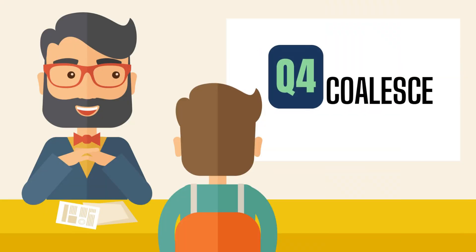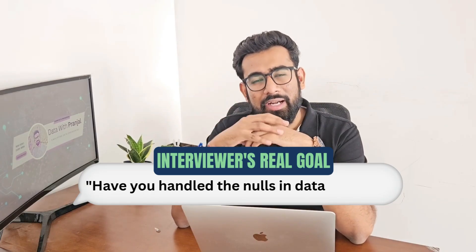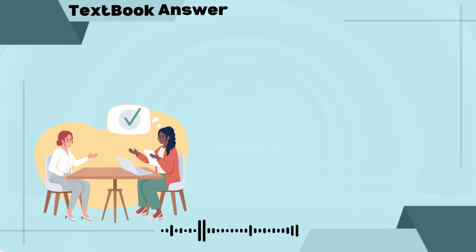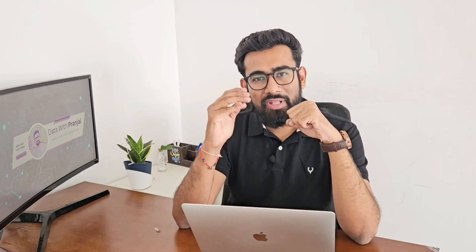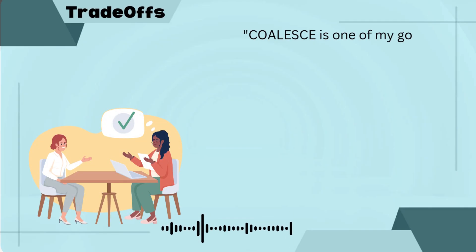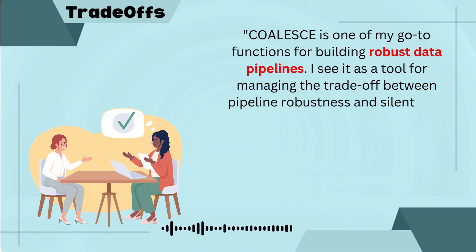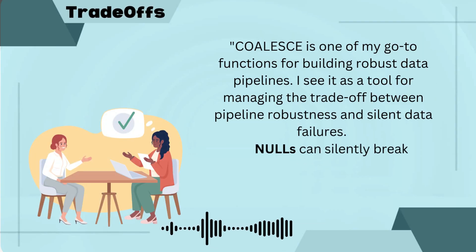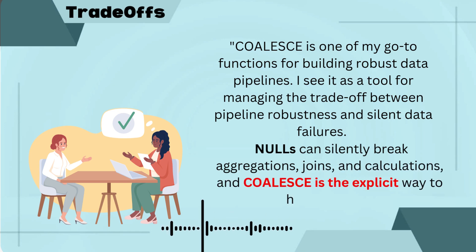Question number four: COALESCE. The interviewer's goal here is to understand whether you have handled nulls in your data pipeline. The textbook answer is: COALESCE returns the first non-null value from a list of arguments. But we won't give the direct answer first — we'll talk about the trade-off. COALESCE is one of my go-to functions for building robust data pipelines. I see it as a tool for managing the trade-off between pipeline robustness and silent data failures. Nulls can silently break aggregations, joins, or calculations, and COALESCE is the explicit way to handle them.